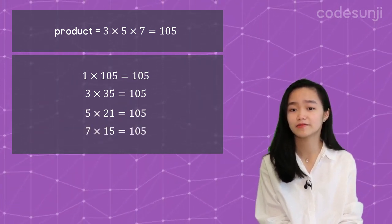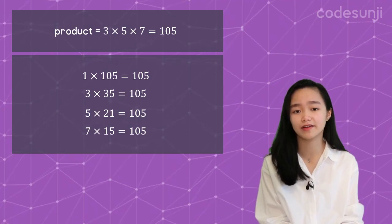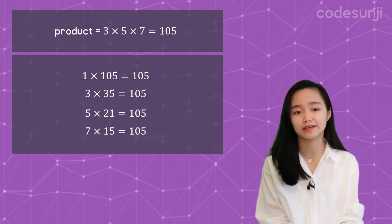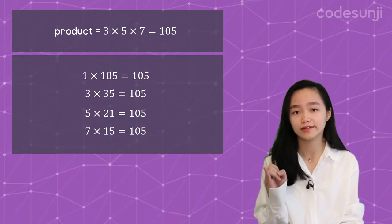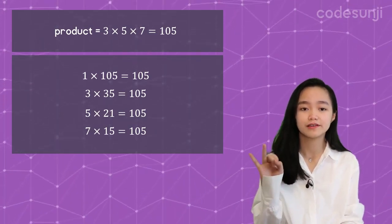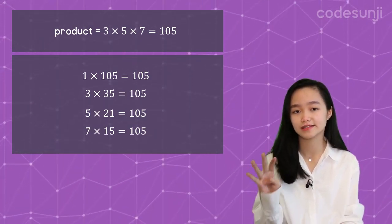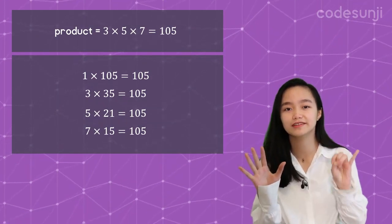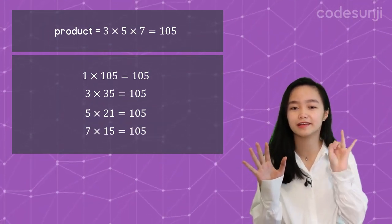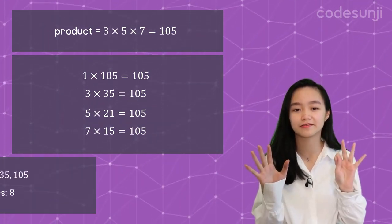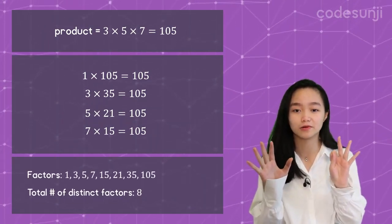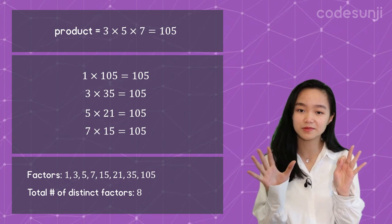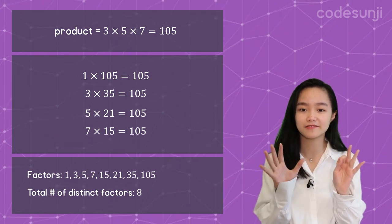All in all, if we factor 105, we get 1, 3, 5, 7, 15, 21, 35, and 105. So since we output the number of distinct factors, we output 8.